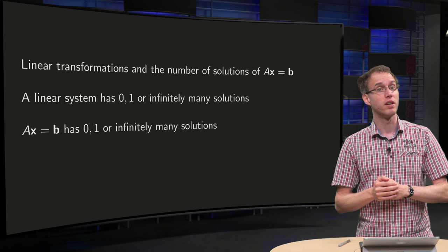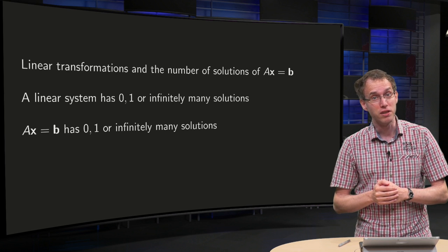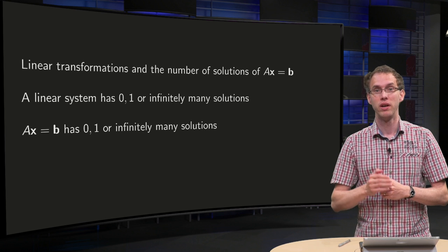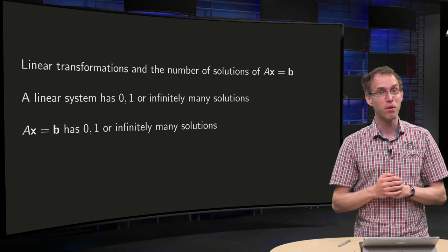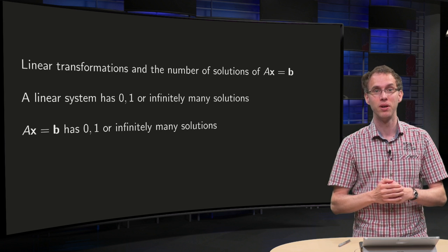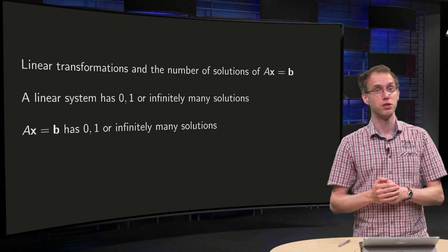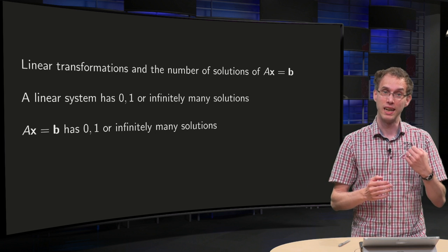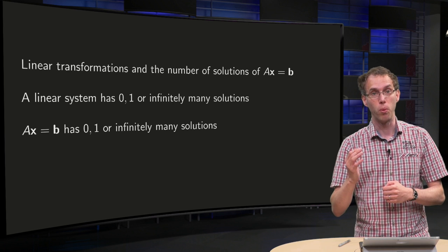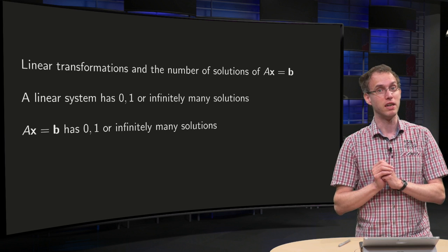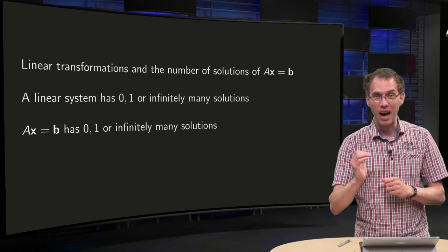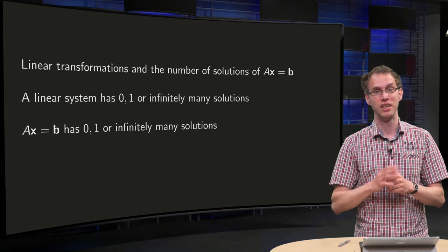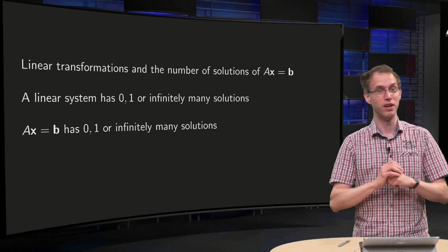The notions of 1-to-1 and onto are quite difficult. In the case of a matrix transformation, though, they are related to the number of solutions of a linear system. When solving linear systems, you know that you can get either no solutions at all — an inconsistent system — or one solution, or infinitely many solutions. How this number of solutions relates to matrix transformation is what you will learn in this video.